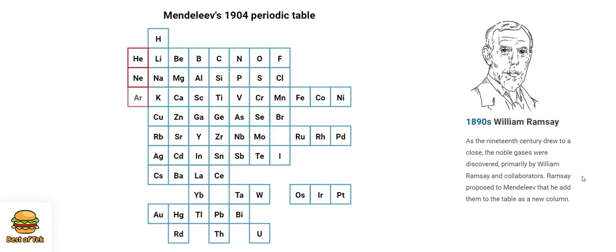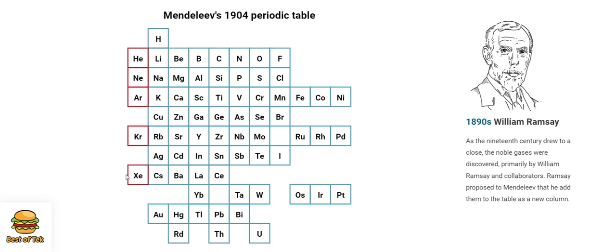1890s. William Ramsay. As the 19th century drew to a close, the noble gases were discovered, primarily by William Ramsay and collaborators. Ramsay proposed to Mendeleev that he add them to the table as a new column.